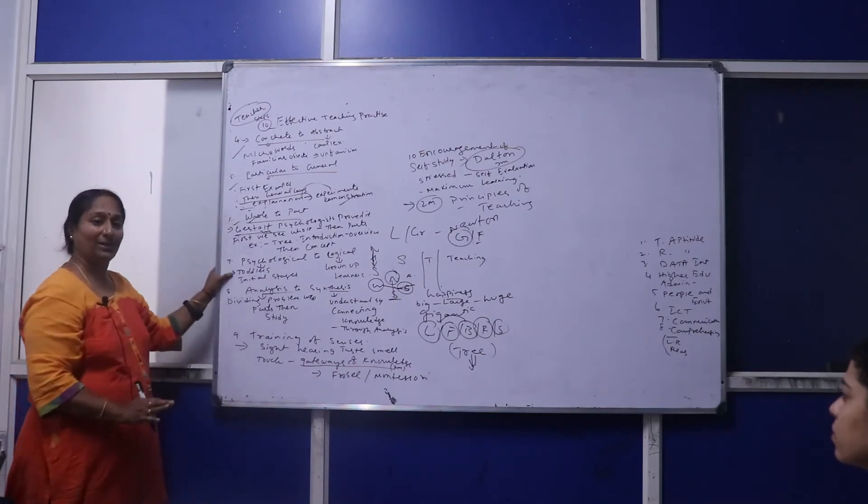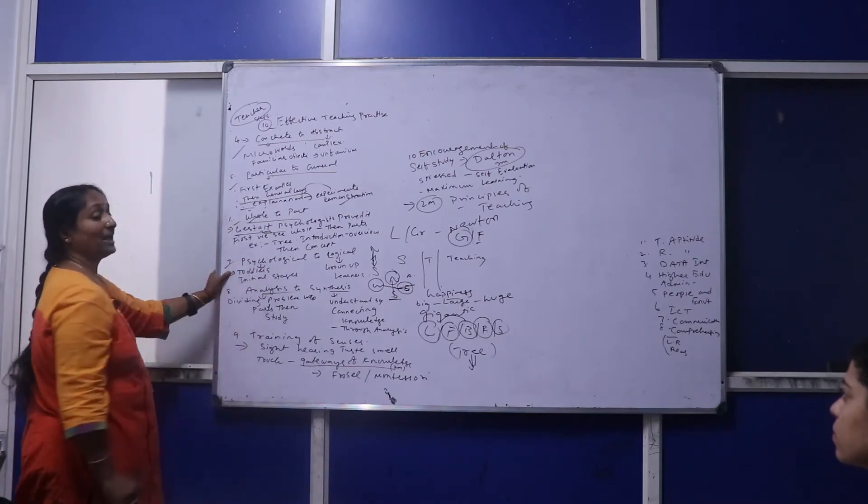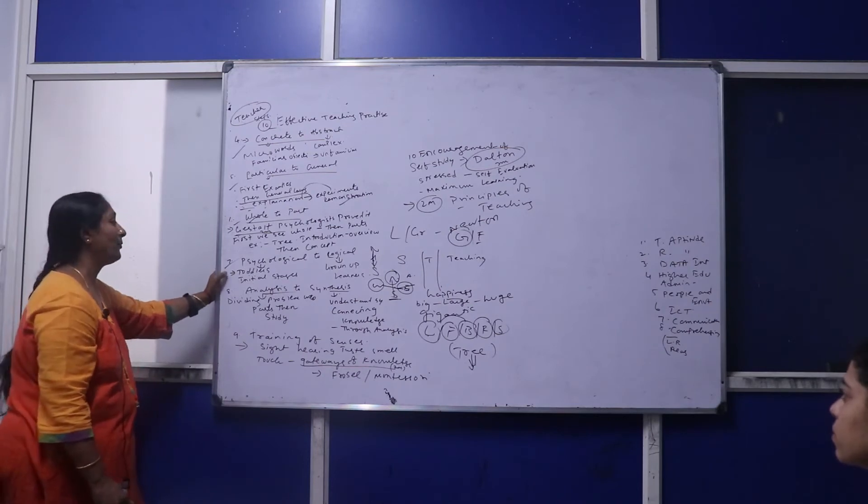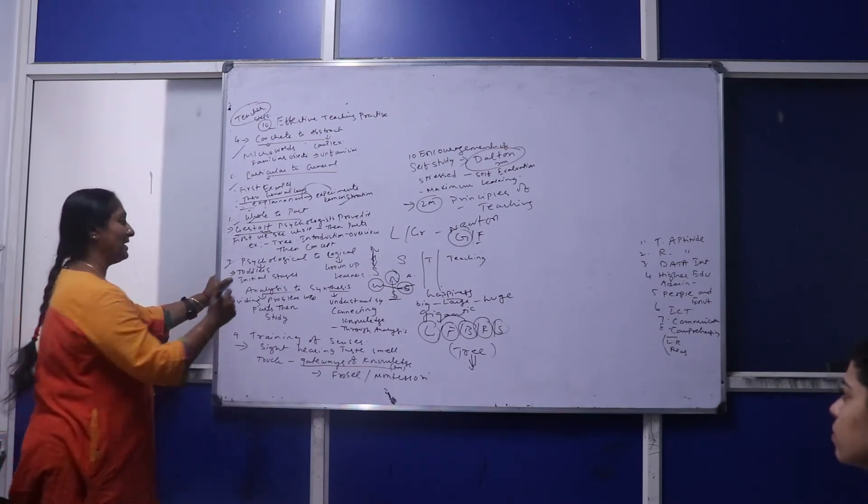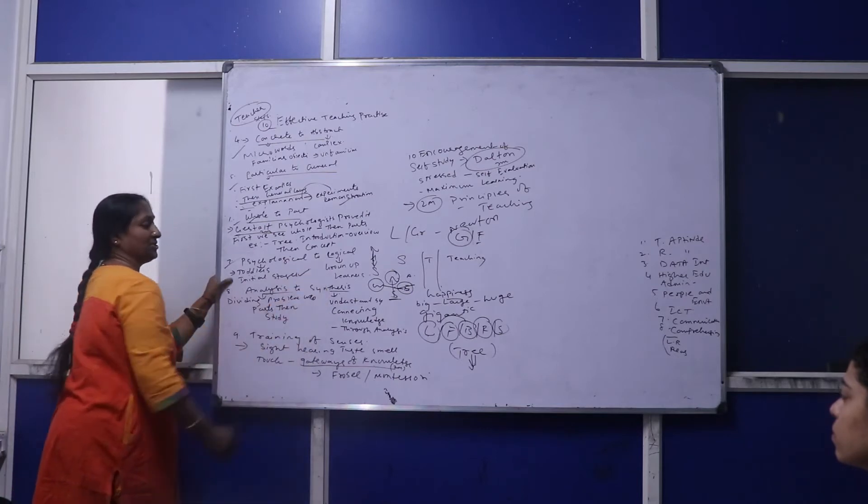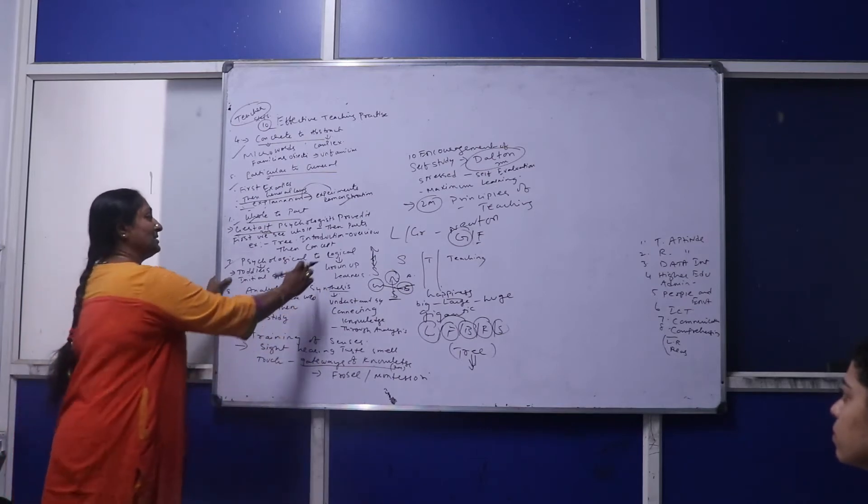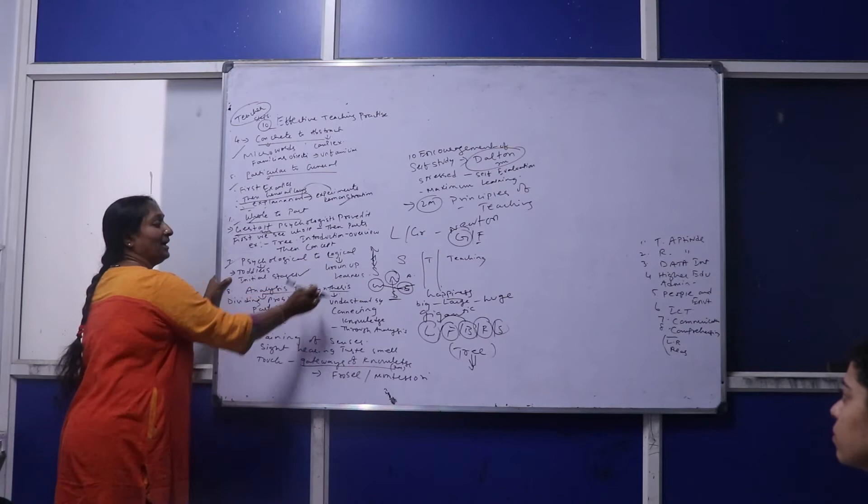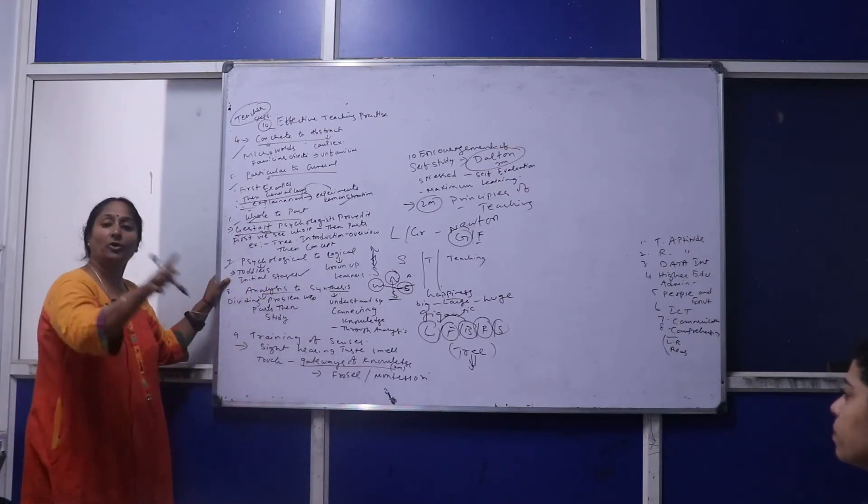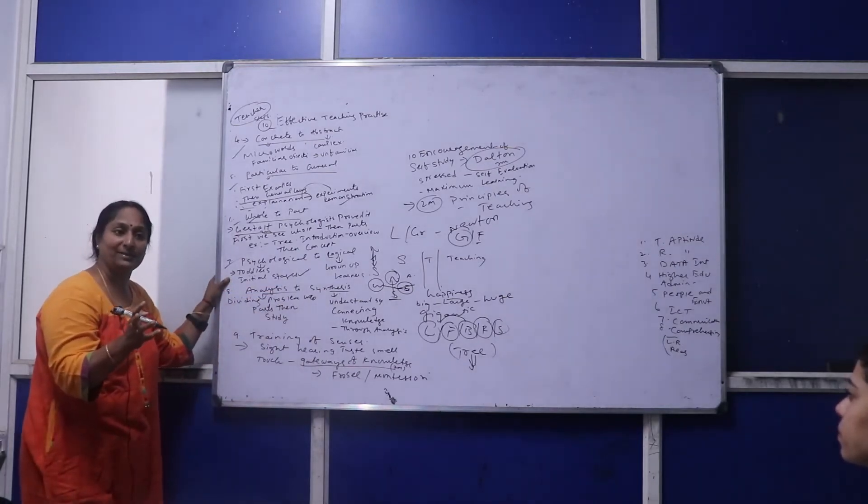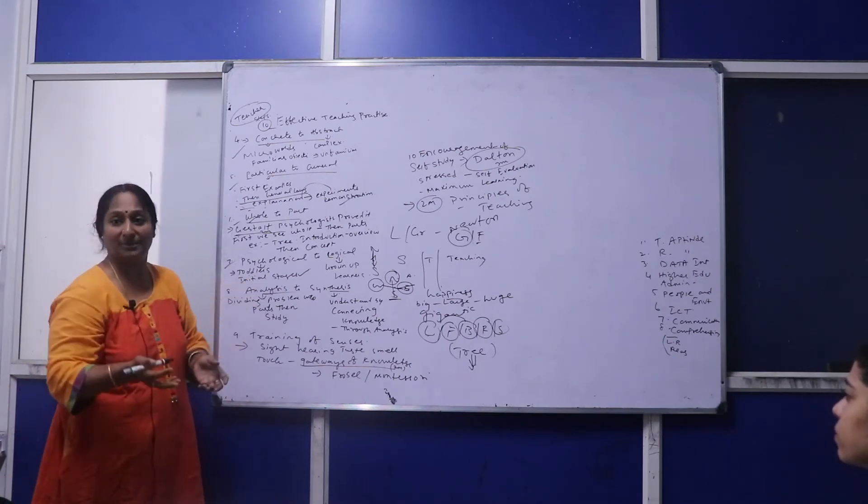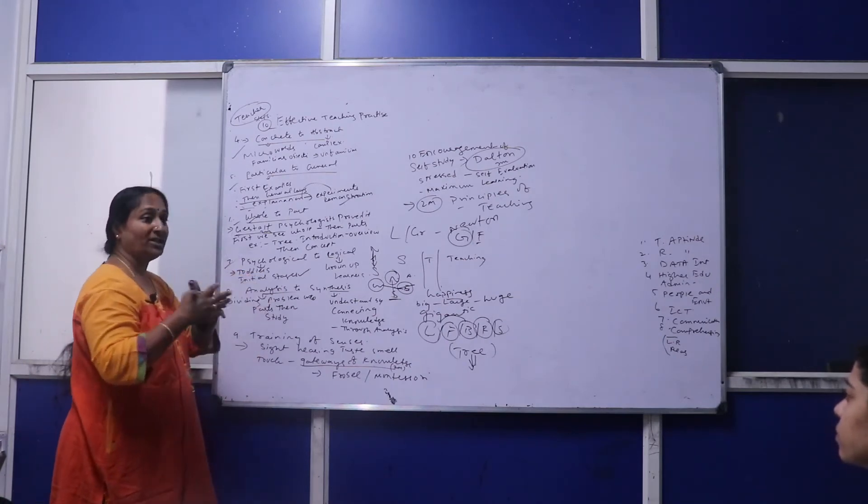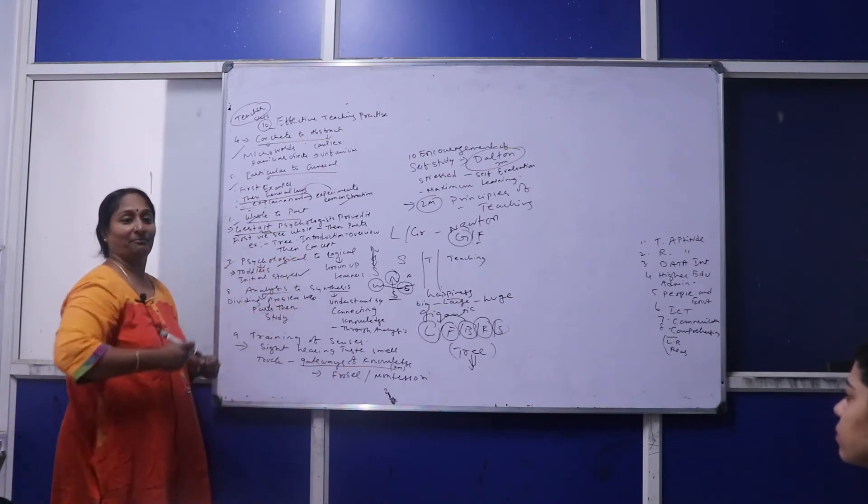Same way, whenever you're going to class, your first thing should be to describe an overview of the topic, then explain individual concepts. Next one is psychological to logical. This is again proved by people—whenever toddlers are there, you have to teach them in the initial stages. This logical part you should apply when they're grown-up learners.